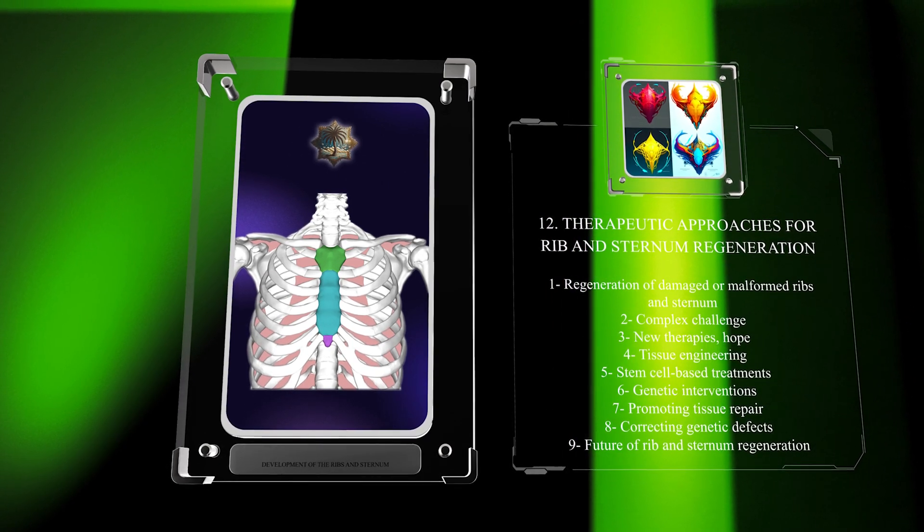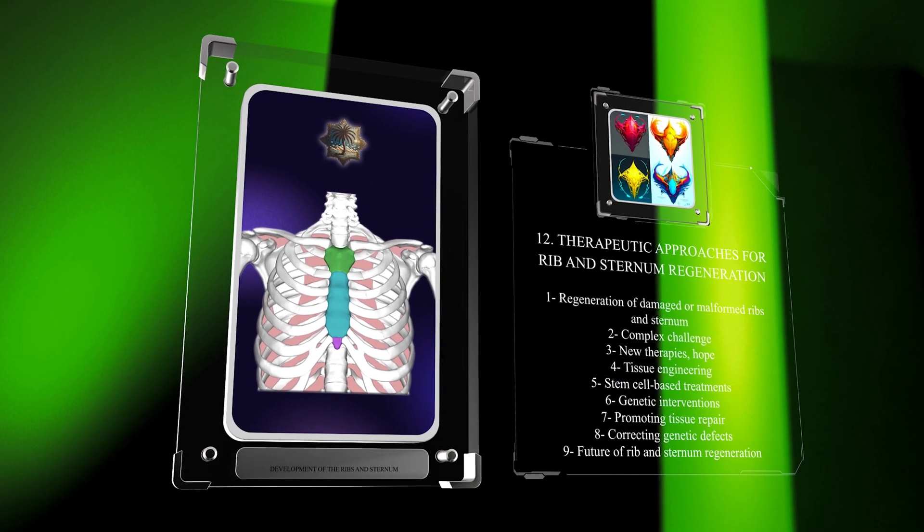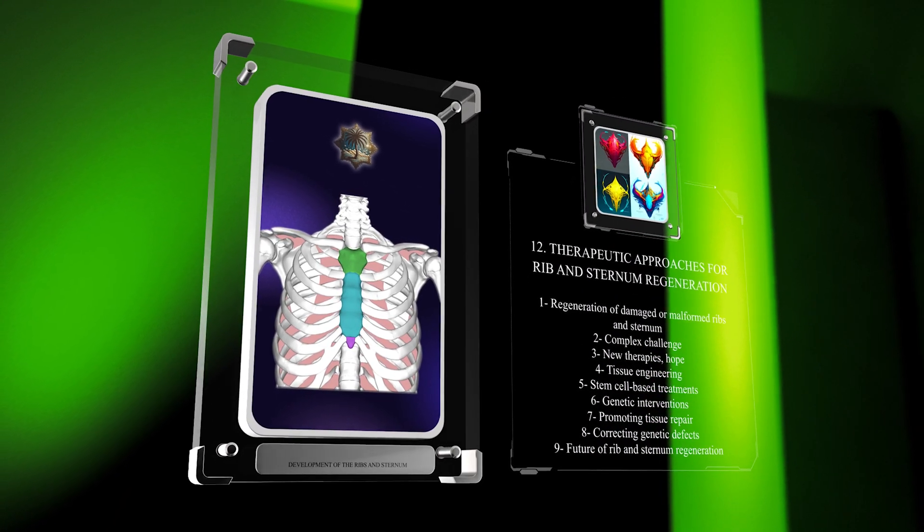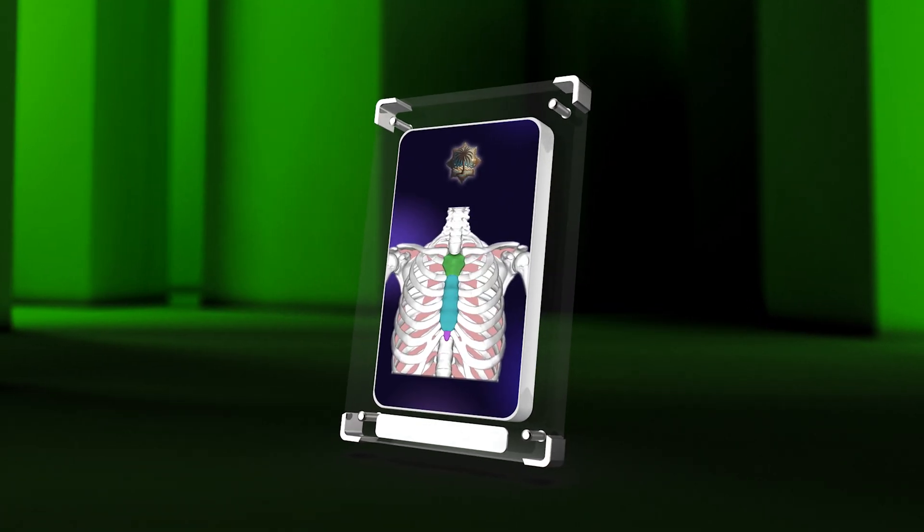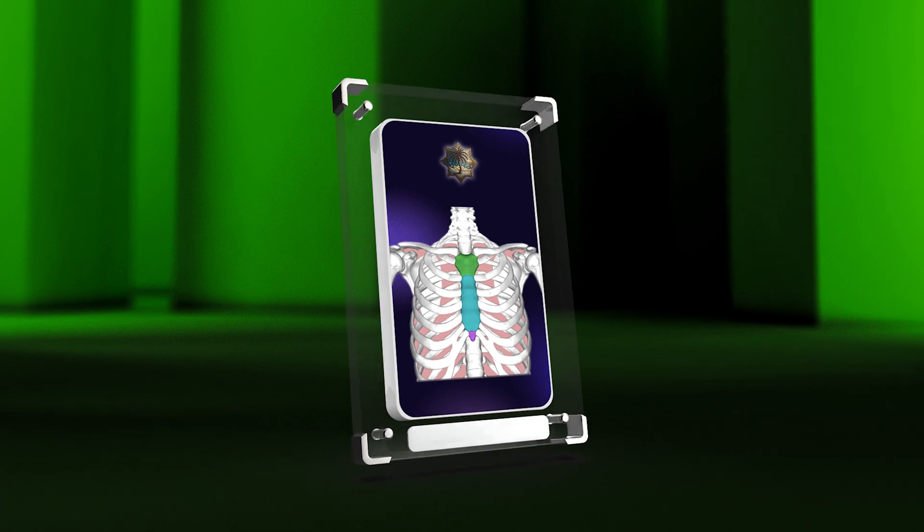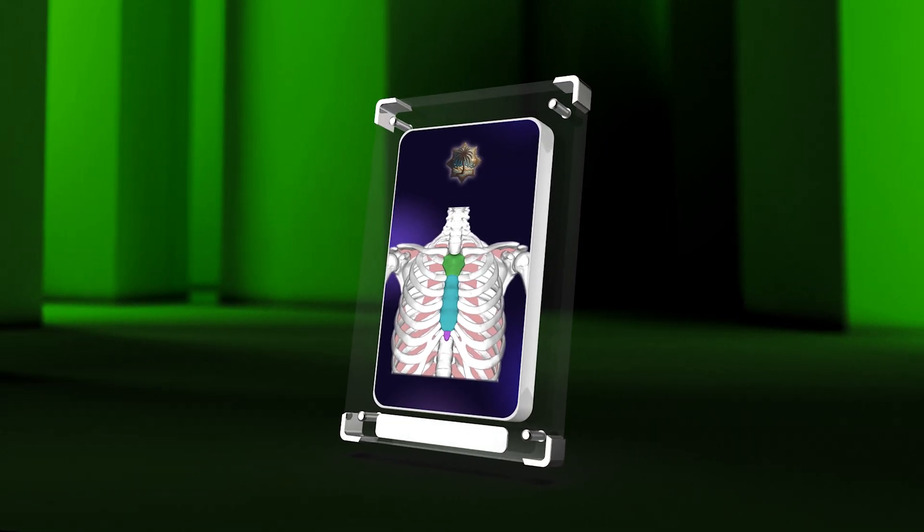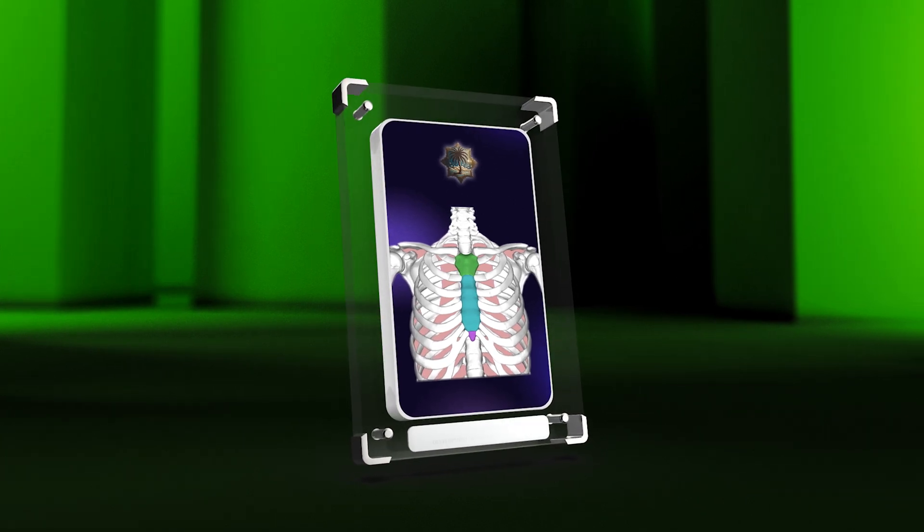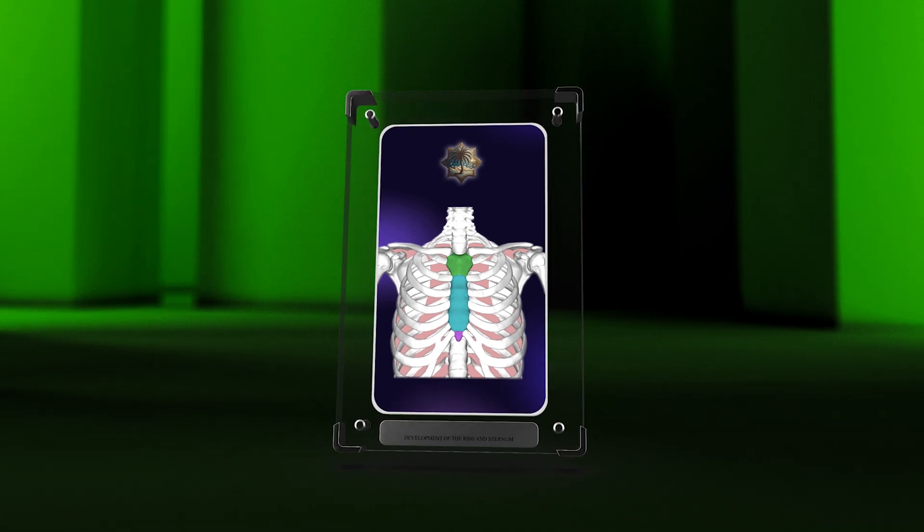We will explore how these strategies can promote tissue repair and correct genetic defects. Join us to learn more about the future of rib and sternum regeneration. In conclusion, the development of ribs and sternum is a complex process involving various cellular and molecular events. Understanding these mechanisms is crucial for unraveling anomalies and developing therapeutic strategies. Exploring genetic and environmental factors helps us gain insights into this fascinating field.